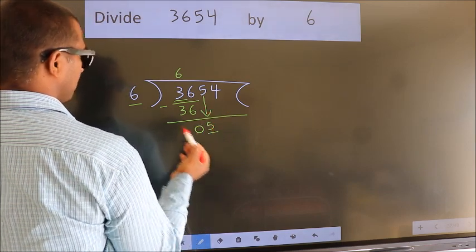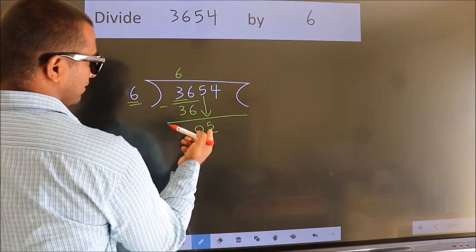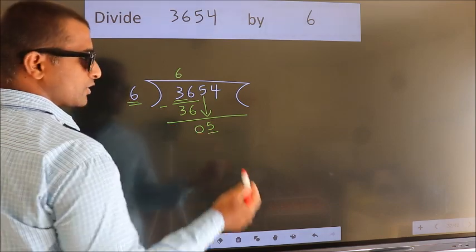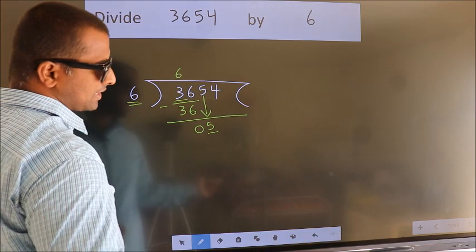Here we have 5, here 6. 5 is smaller than 6, so we should bring down the second number.